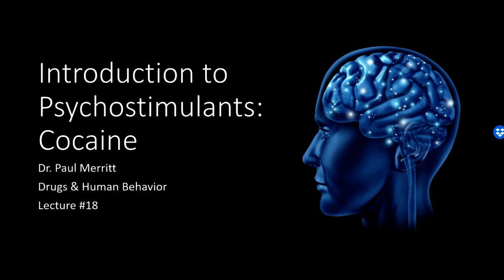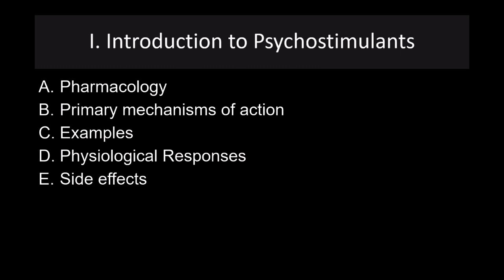Let's get started on lecture number 18. This lecture will continue our discussion of drugs of use and abuse. The second half of the term we'll get into talking about drugs used to treat mental illness, but for now we've moved on from legal low-grade stimulants like caffeine and nicotine, and we're going to talk about psychostimulants. In this lecture we'll focus on cocaine, and in the next lecture we'll focus on amphetamines. We'll cover pharmacology, primary mechanisms of action, examples, physiological responses, and side effects.